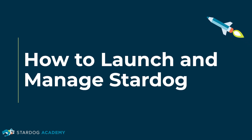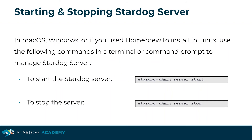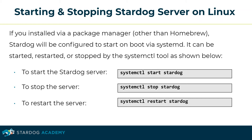This section is about how to launch and manage Stardog. In macOS, Windows, or if you used Homebrew to install on Linux, use the following commands in a terminal or command prompt to manage the Stardog server. To start the Stardog server enter: stardog-admin server start. To stop the server enter: stardog-admin server stop. On Linux, if you installed via a package manager other than Homebrew, Stardog will be configured to start on boot via systemd. It can be started, restarted, or stopped by the systemctl tool: systemctl start stardog, systemctl stop stardog, and systemctl restart stardog.